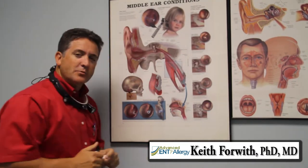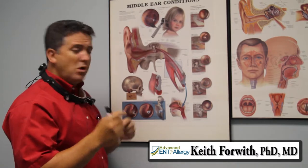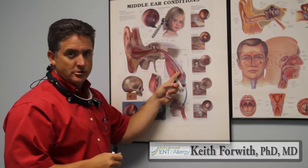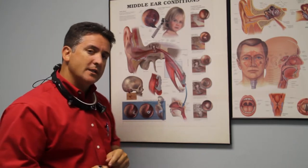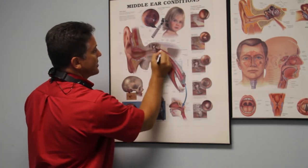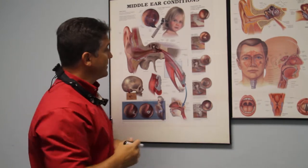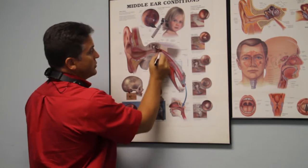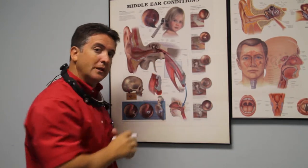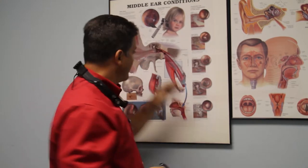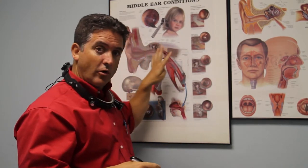Hi, I'm Dr. Keith Forworth and I'm going to talk about ear tubes today. One of the things we see quite often is that mostly children, but some adults have trouble with their eustachian tube. Most of the time we see that it doesn't allow fluid that's accumulated in the middle ear from infection to properly drain. Normally the fluid would drain down and out the eustachian tube and into the back of the nose. But what happens when this isn't occurring normally?